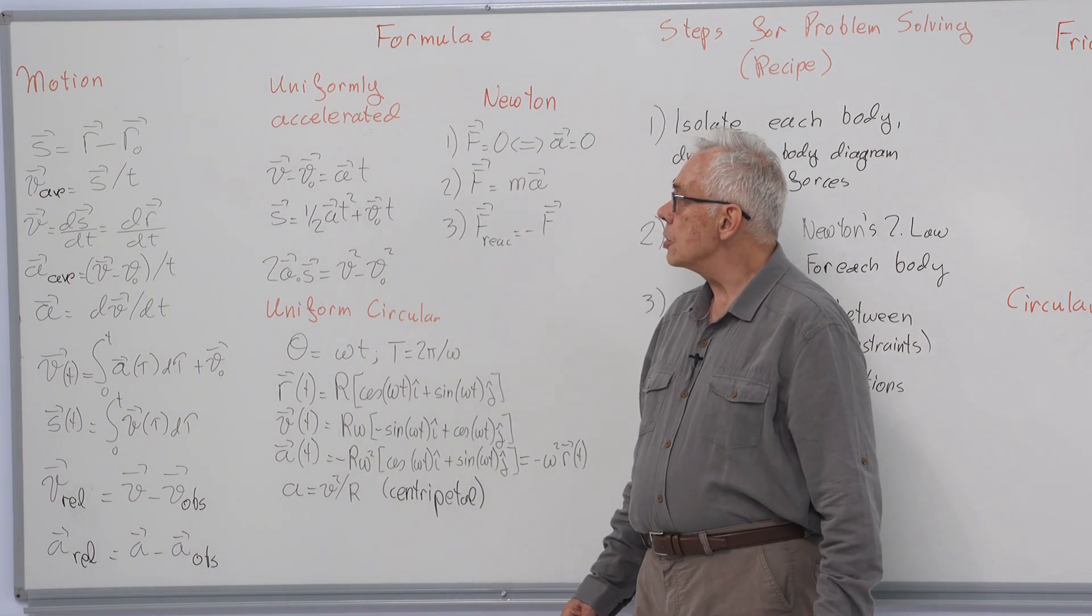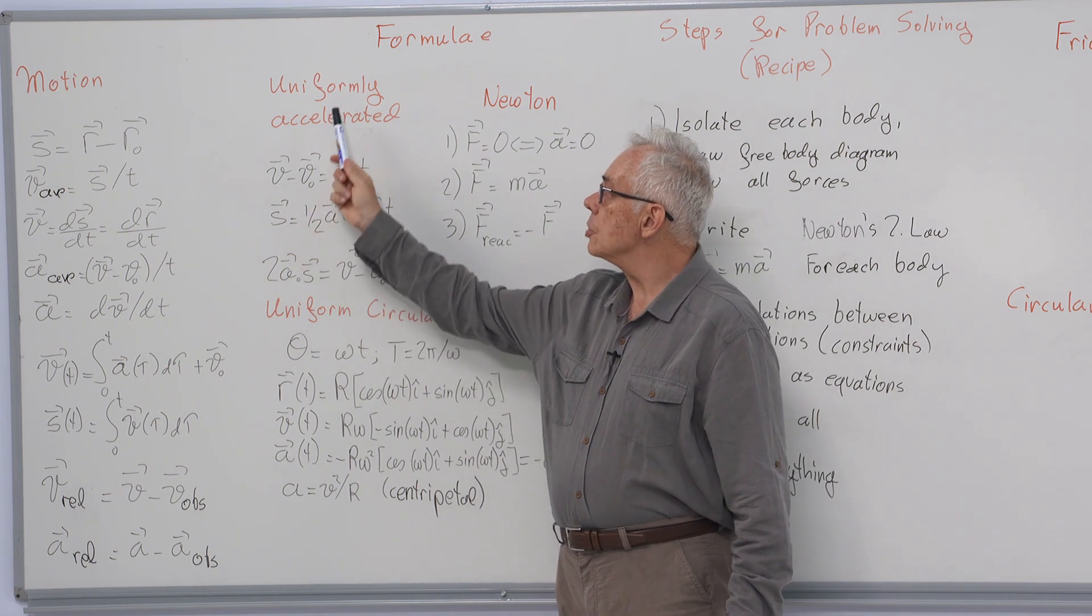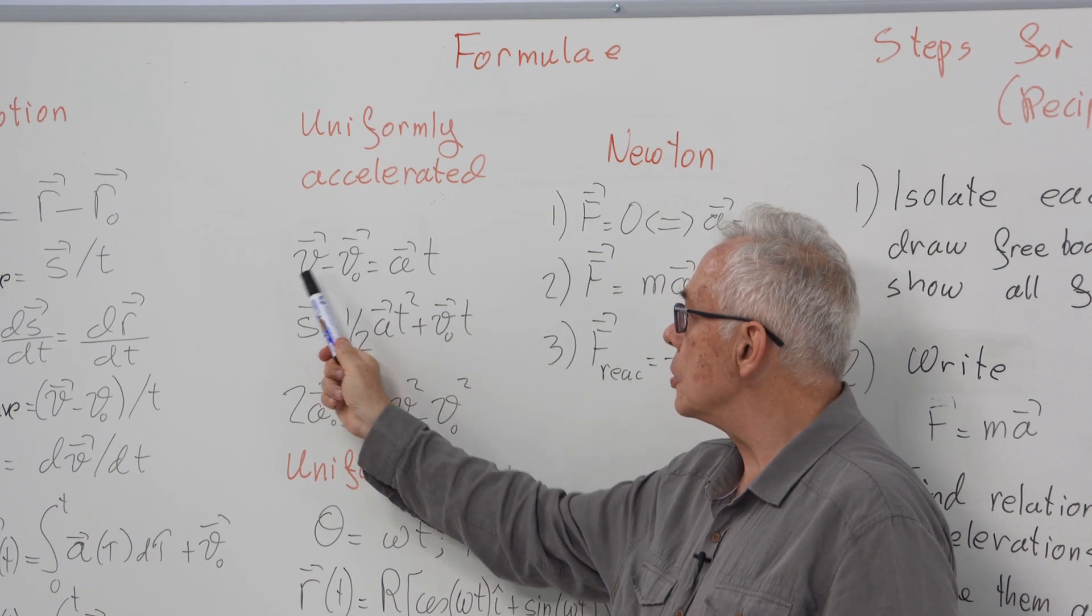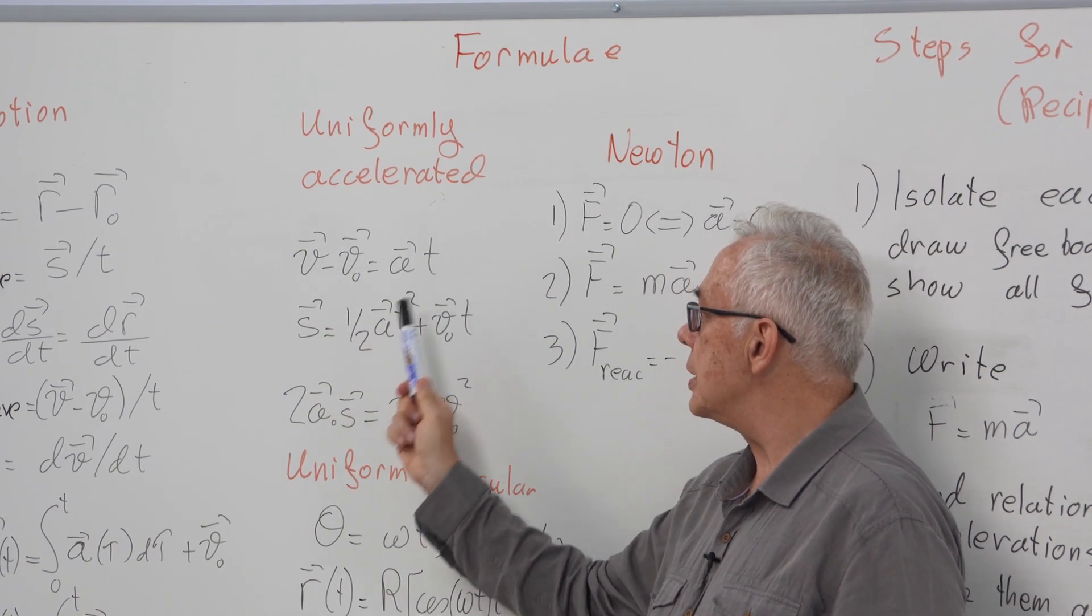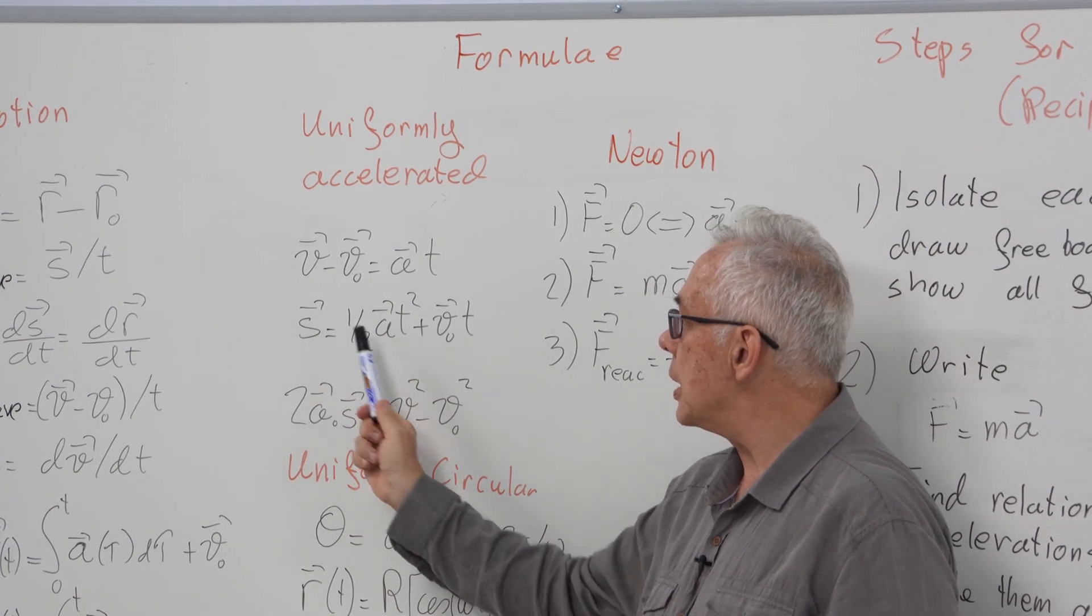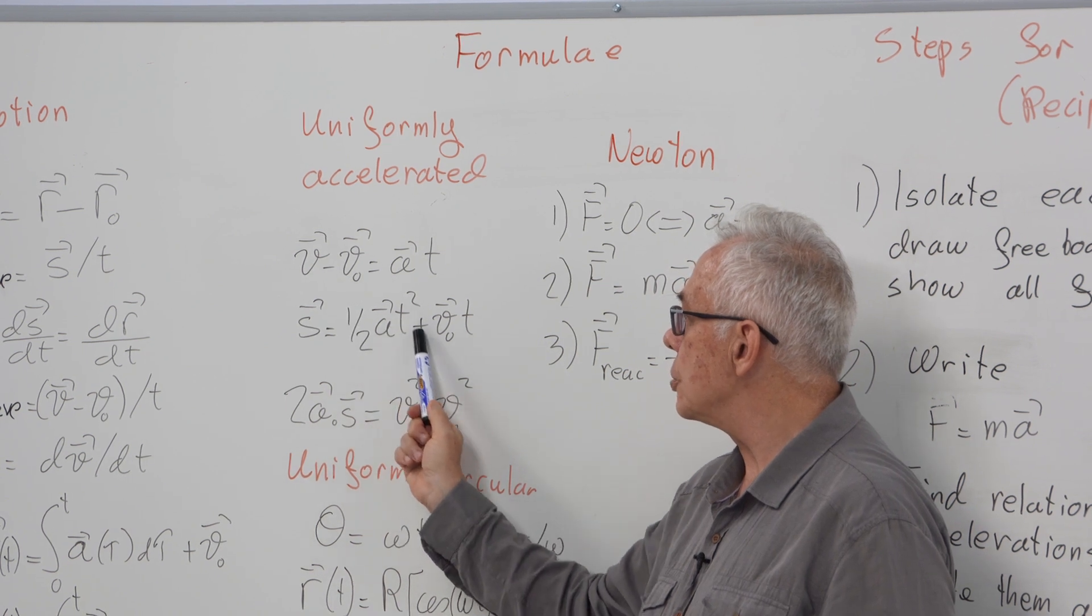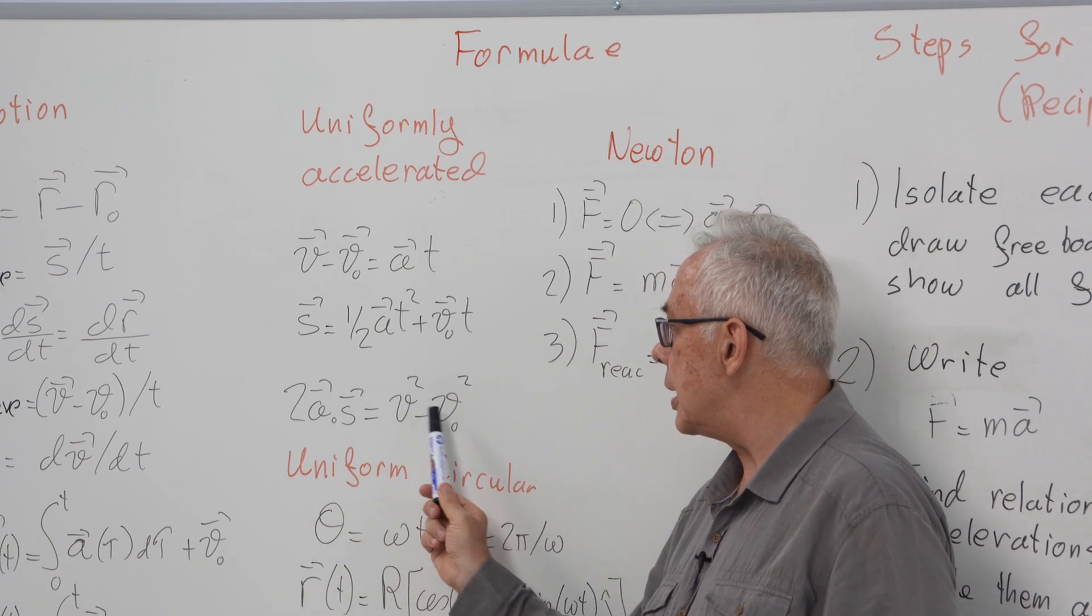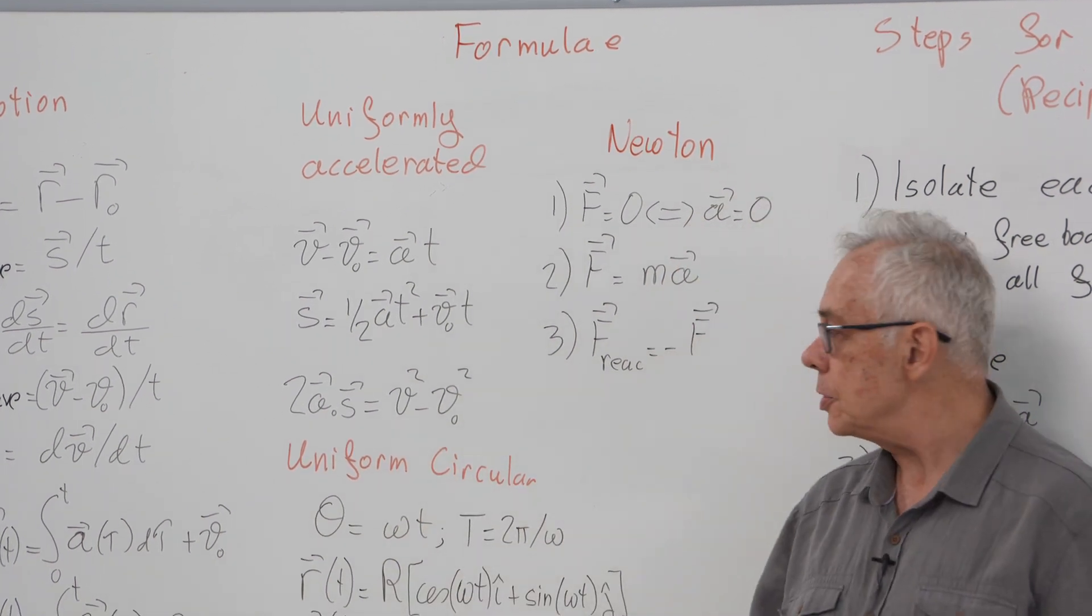We looked at two cases of motion: uniformly accelerated, where a is a constant, so change in velocity is just a t, and displacement is 1/2 a t squared plus v_0 t. The time-independent formula is 2 a s equals v squared minus v_0 squared.